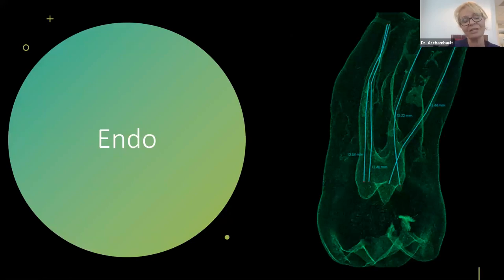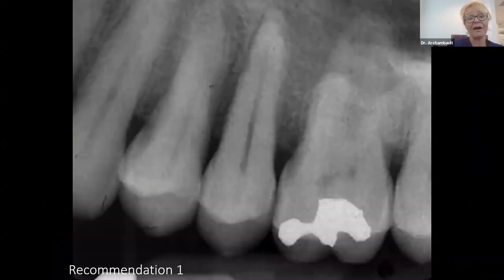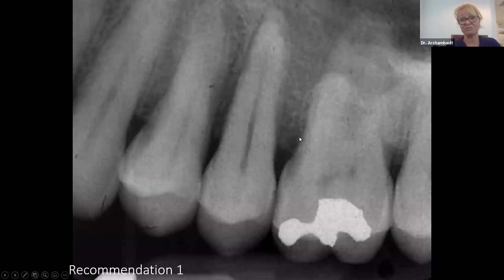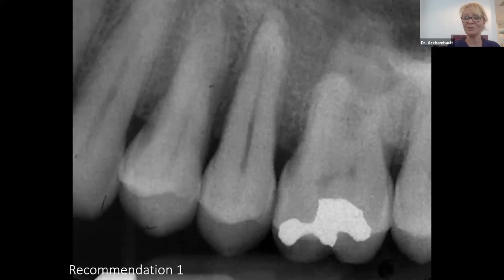Let's start with endo. We saw one case of acute abscess spreading all the way to the orbit. Here's a patient that presents to your office. According to the recommendation of the American Association of Oral Maxillofacial Radiologists, just take a periapical radiograph to assess the apical area of the teeth. But it's difficult in that case to see if there's anything going on when the patient's symptomatology is not very clear.